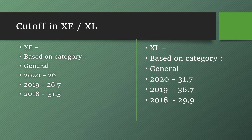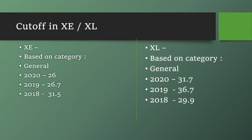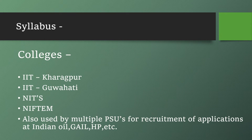Looking at the cutoff for the general category over the last three years — 2020, 2019, and 2018 — for XE it has been 26, 26.7, and 31.5 respectively, as you can see on screen. For XL it has been 31.7, 36.7, and 29.9 for those consecutive years.